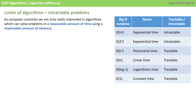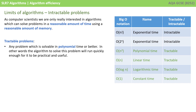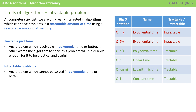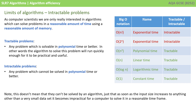At A-level, you'll also start to study the limits of algorithms, including what we call intractable problems. As computer scientists, we're only really interested in algorithms which can solve problems in a reasonable amount of time using a reasonable amount of memory. Tractable problems, therefore, are any problems which are solvable, according to big O notation, in polynomial time or better — in other words, the algorithm will run quickly enough to be useful to you. Algorithms which execute exponentially, or are worse in big O notation than polynomial, are known as intractable problems. This doesn't mean these problems can't be solved by an algorithm — they can and we have a big O notation for them — it's just that as soon as the input size increases beyond a very small data set, it becomes impractical for computers to solve it in any reasonable timeframe.